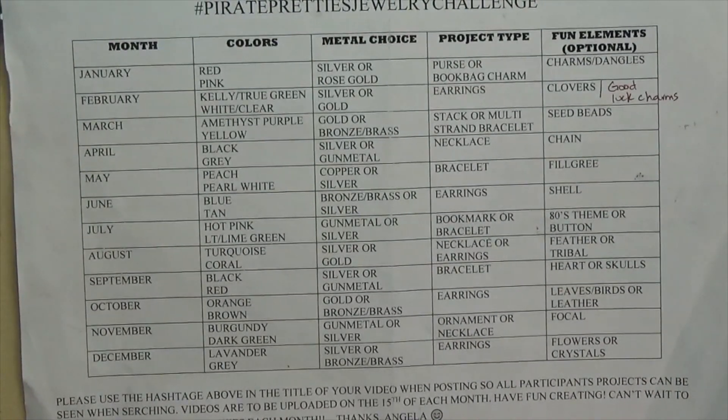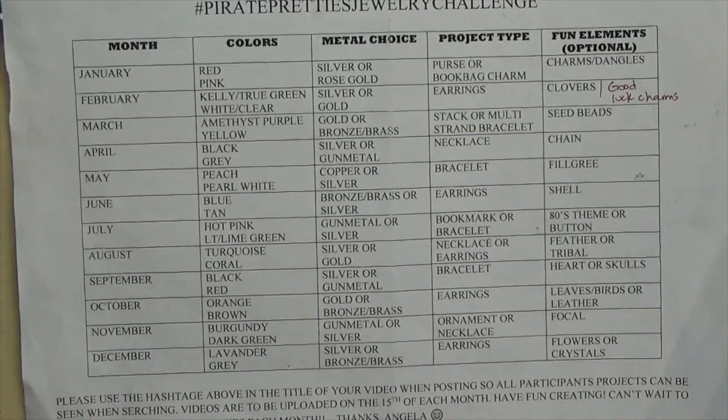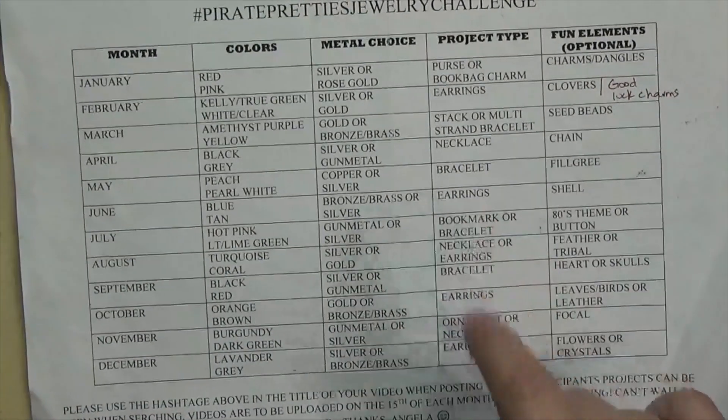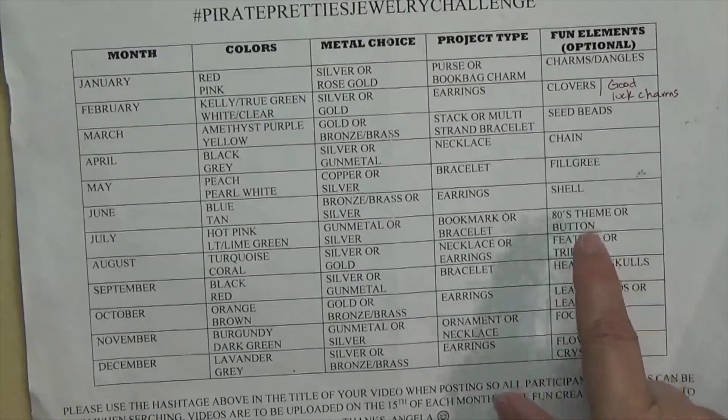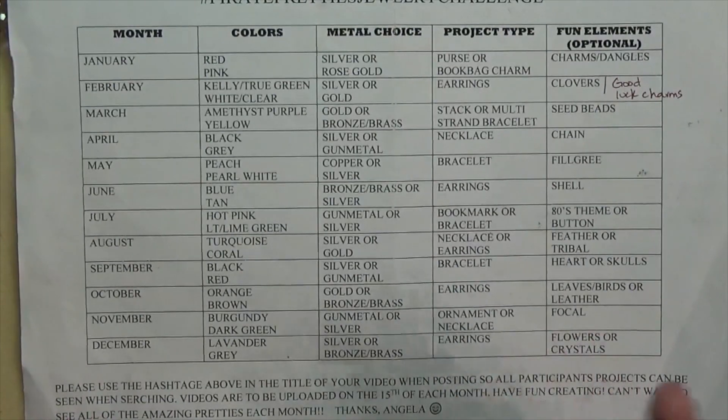This is a double color challenge, so each month there are two colors you need to work with to make one design. You also get a choice of metals, there's an assigned project type, and then an optional fun element. This month the colors are blue and tan, metal choice is bronze/brass or silver, project type is earrings, and the fun element is shell.